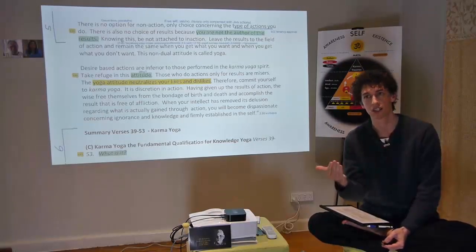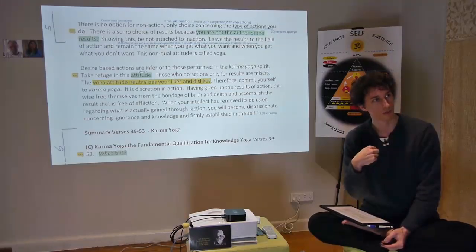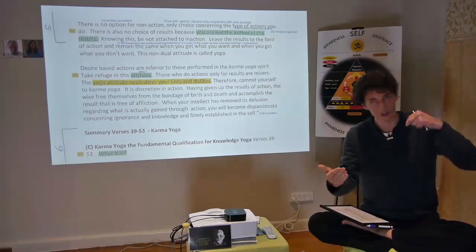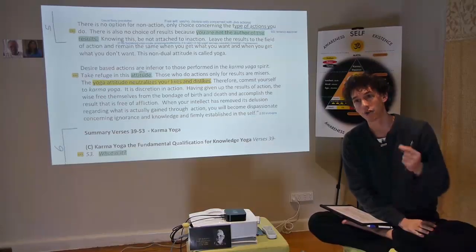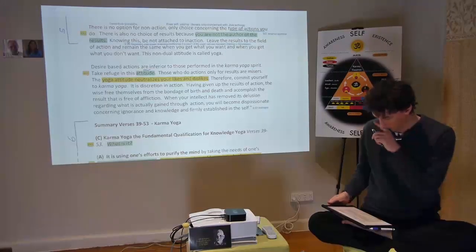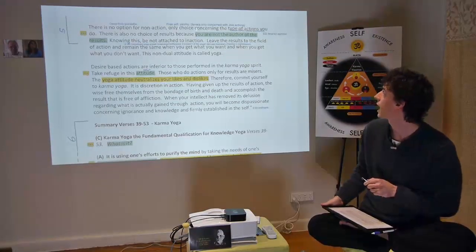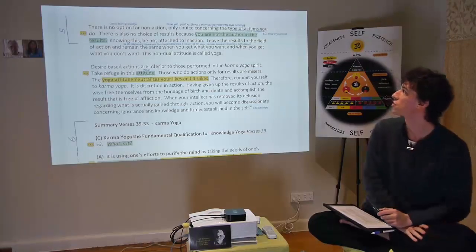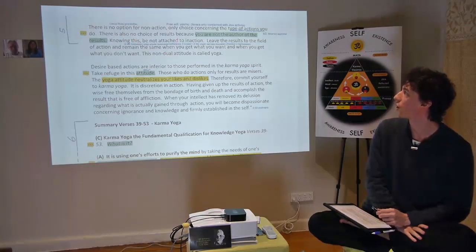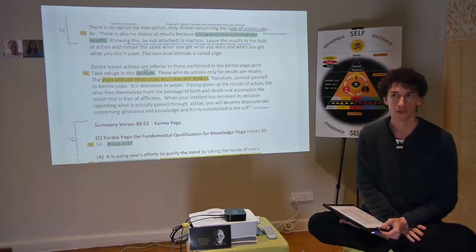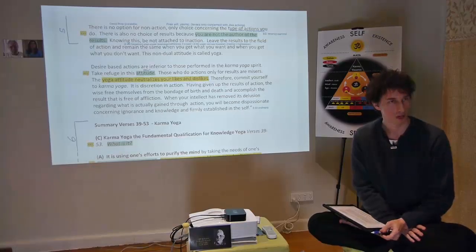What is a jiva's anxiety all about? My duty. My responsibility. I need to deal with this. Because jiva thinks I'm separate from the world, therefore it's my fault. We're going to arrive at how it actually cannot be your fault. There is also no choice of results because you are not the author of the results. Who is the author? Ishwara.